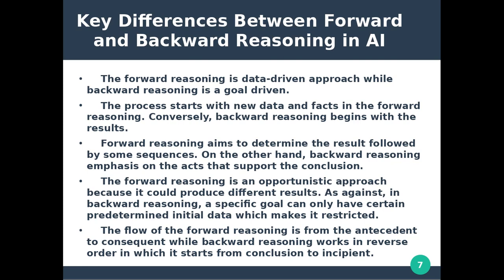Forward reasoning flows from the antecedent to the consequent. Backward reasoning is the reverse order: it starts from the conclusion back to the antecedent. These are the key differences between forward and backward reasoning.